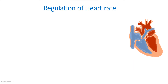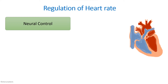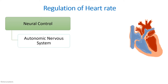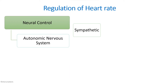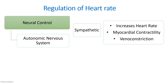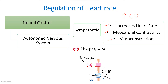Now we will see regulation of heart rate. There can be neural control as well as humoral control. The most important neural mechanism is the autonomic nervous system. The heart has a rich sympathetic as well as parasympathetic supply. With sympathetic stimulation there is an increase in heart rate, myocardial contractility, and venoconstriction, all of which increase cardiac output. The mechanism involves norepinephrine acting on beta-1 receptors, increasing cyclic AMP levels and causing calcium influx.